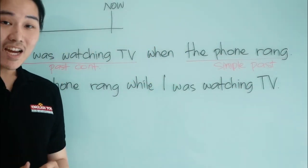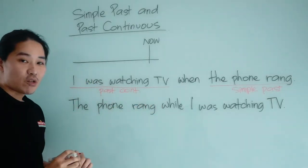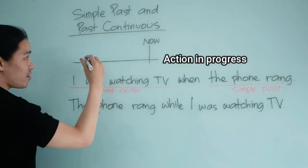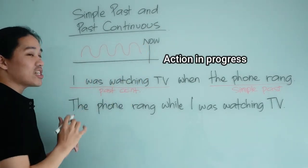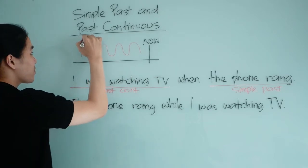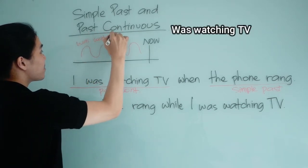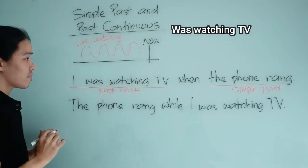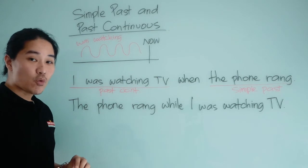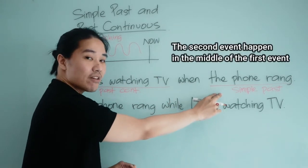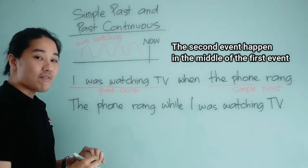If we draw the timeline — the past continuous is an action in progress. So this is 'was watching TV.' When the phone rang, that means the second event happened in the middle of the first event.